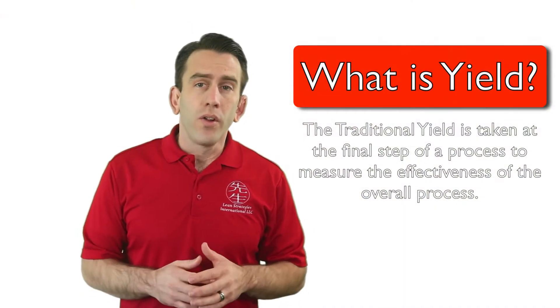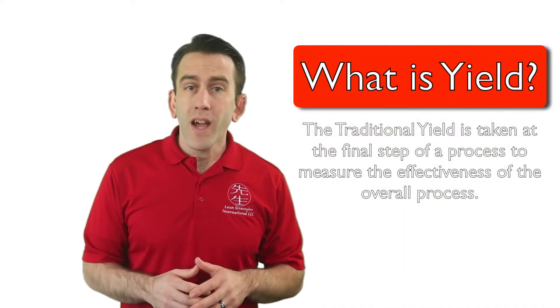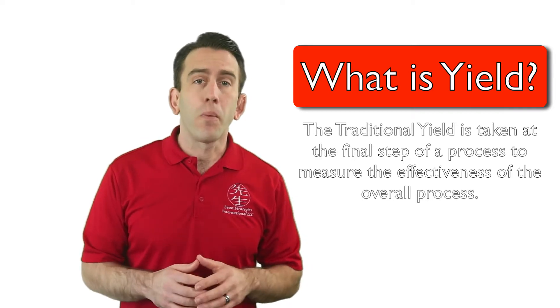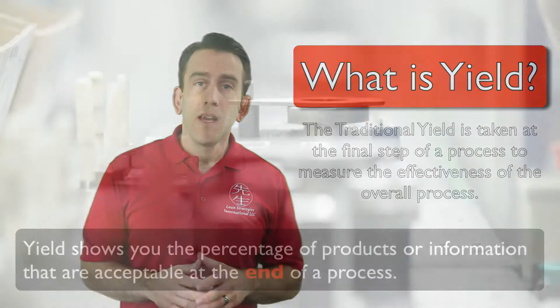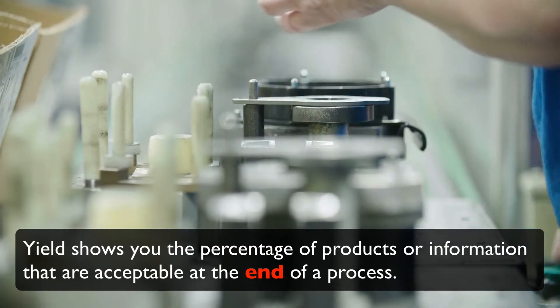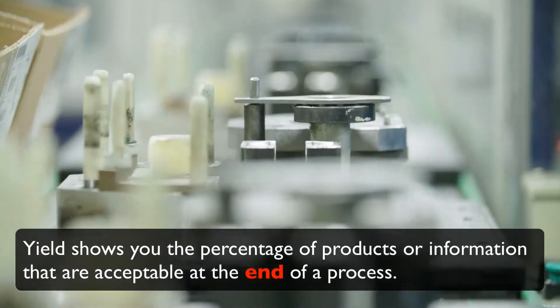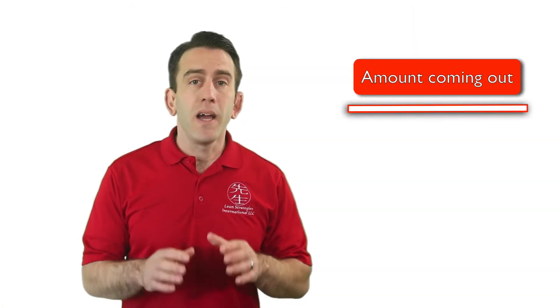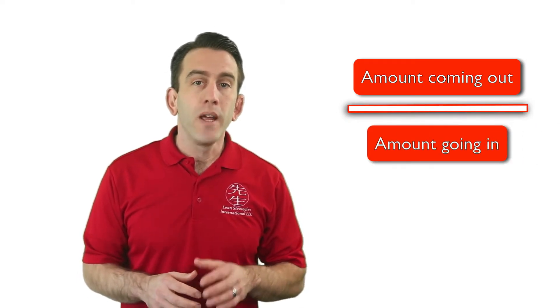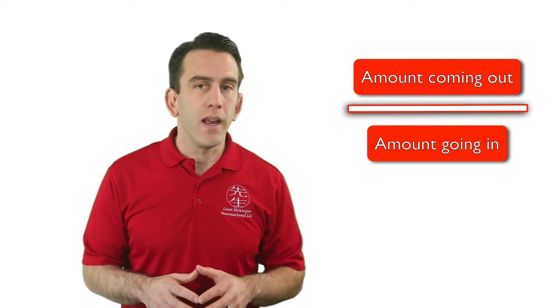The traditional yield is taken at the final step of a process to measure the effectiveness of the overall process. Specifically, it shows you the percentage of products or information that are acceptable at the end of a process. This can be calculated by dividing the final output quantity by the initial input amount and converting that calculation into a decimal or a percentage.